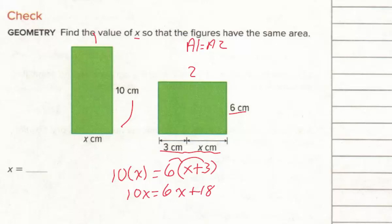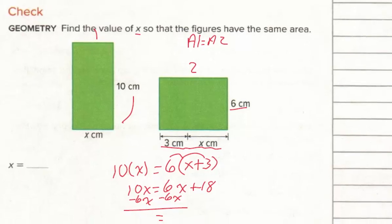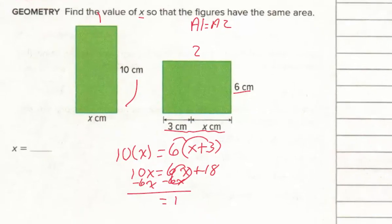Now subtract 6x from both sides since 6x has the smaller coefficient: 10x − 6x gives 4x, and 6x − 6x zeros out, leaving 18. Then divide both sides by 4: x = 18 ÷ 4 = 4.5. So x = 4.5 centimeters.